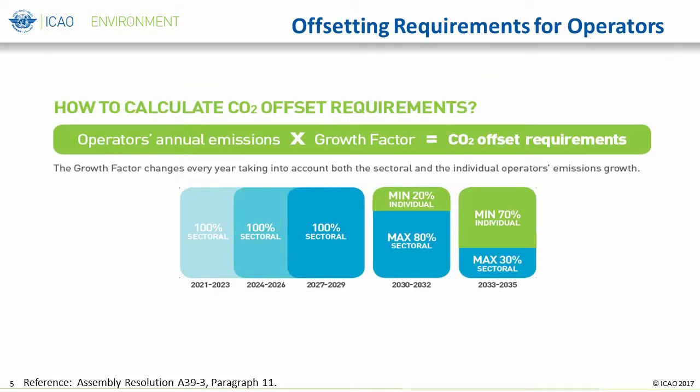Now that we are able to determine the sector-wide offsetting requirements, we need to calculate the offsetting requirements for individual aircraft operators. The formula agreed to by the assembly is quite simple and can be found in paragraph 11 of Resolution A39-3. The formula is defined as the operator's annual emissions multiplied by the growth factor, which gives you the CO2 offset requirements. The concept is based on the fact that there are different sizes of operators and that operators' emissions will grow at different rates, yet the sector-wide growth factor should be commonly used for all operators for the first nine years of CORSIA, or from 2021 to 2029, as a means to share the burden of fluctuations. This is defined as using a 100% sectoral approach.